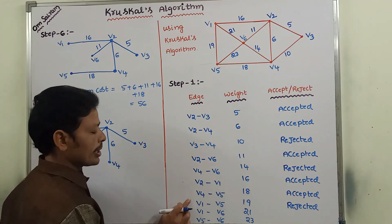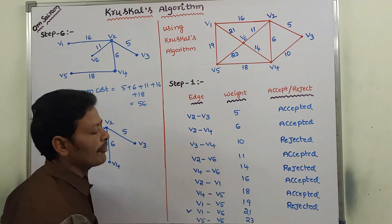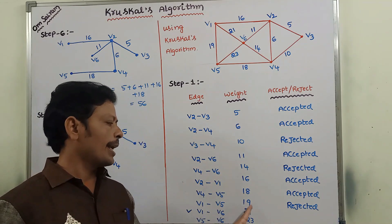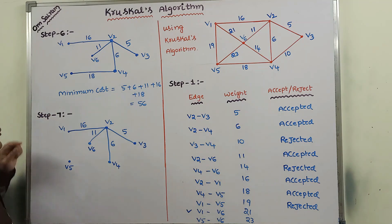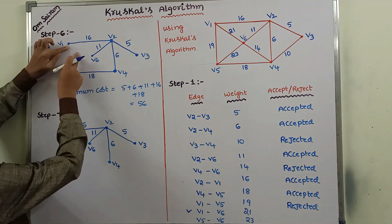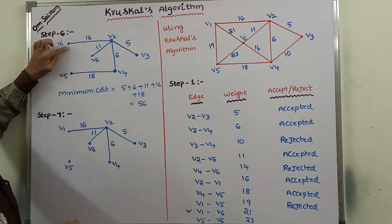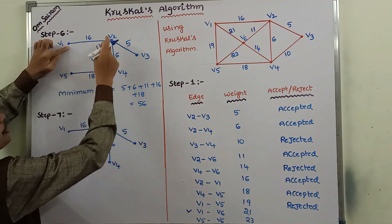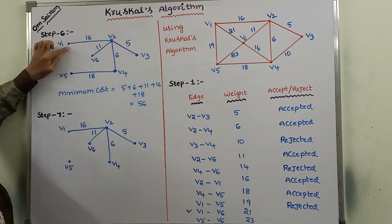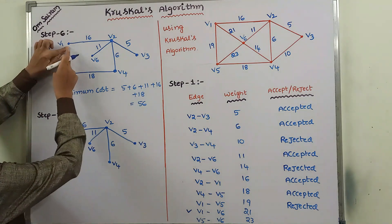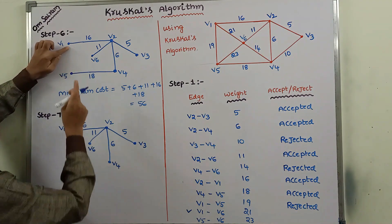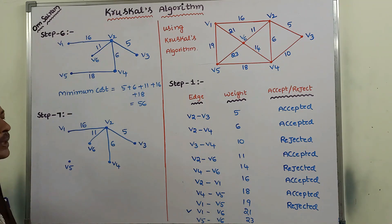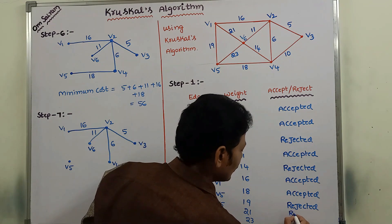Next, we go for another minimum weighted edge: V1 to V6, weight 21. After adding this edge V1 to V6, it can form a cycle: V1 to V6, V6 to V2, V2 to V1. So this edge is also rejected.